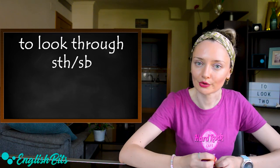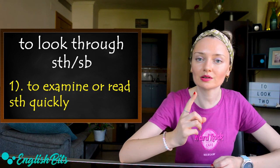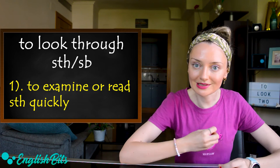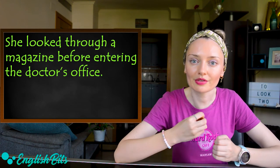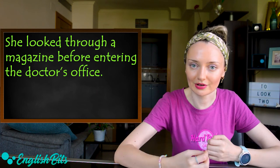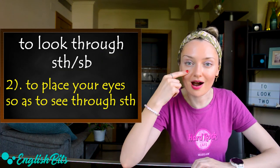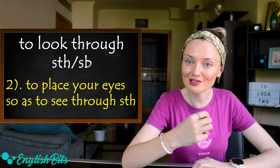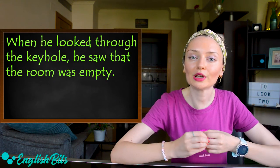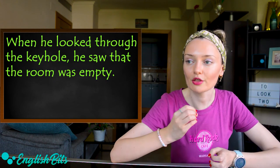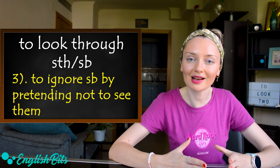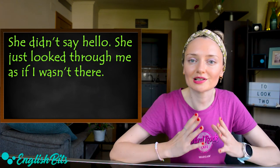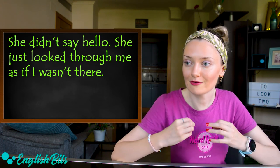Number thirteen: to look through. It has different meanings. The first one is a synonym of to look over — to examine or read something quickly. For example: she looked through the magazine before entering the doctor's office. The second meaning is to place your eyes in order to see through something — for example, a telescope, binoculars, or a keyhole. For example: when he looked through the keyhole, he saw that the room was empty. The third meaning is to ignore someone, pretending not to see them. For example: she didn't say hello — she just looked through me as if I wasn't there.